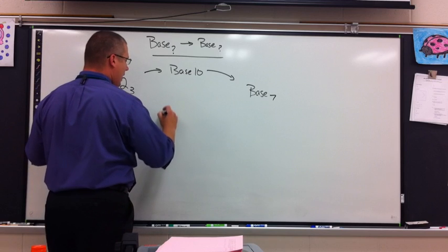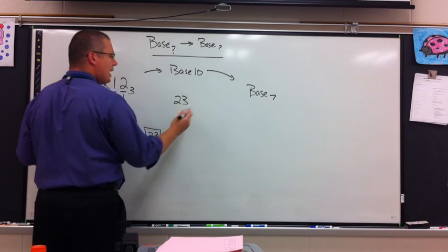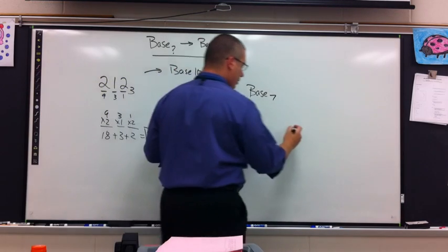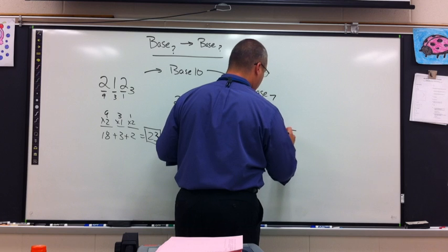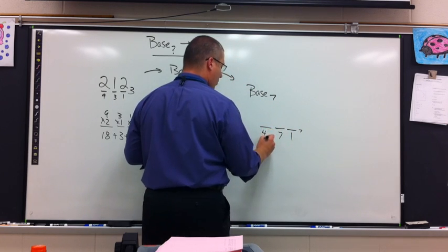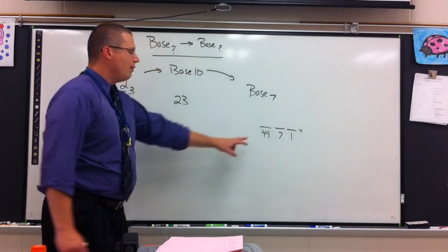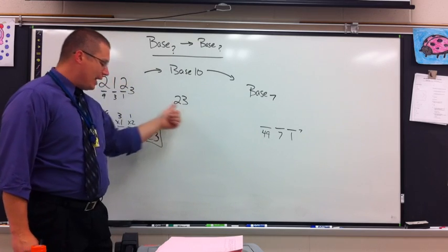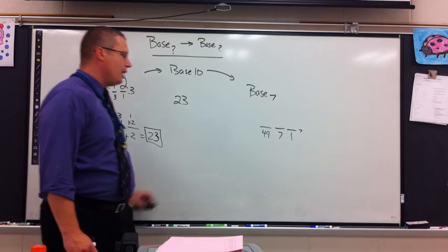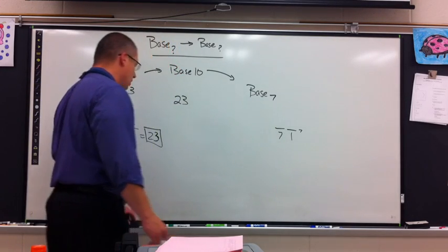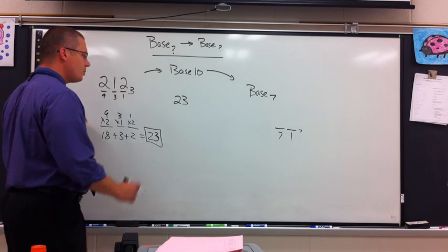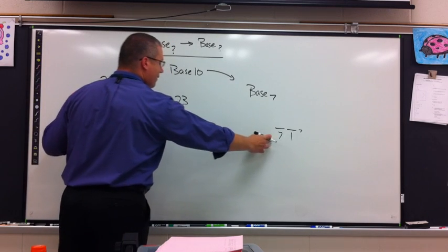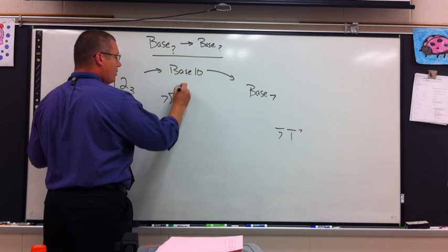So I have 23 in base 10 and now I want to end up in base 7. Base 7 place values: 1, 7, 49 would be next. 49 is too big to fit into 23, so I can erase that. This is going to be a fairly small number. So I can do base 7 place values into 23. 7 goes in 3 times, 21, subtract and get 2.